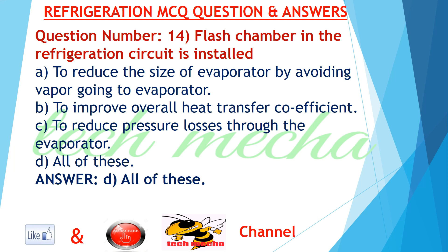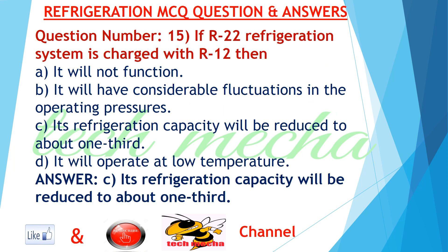Question number 14: Flash chamber in the refrigeration circuit is installed A. to reduce the size of evaporator by avoiding vapor going to evaporator, B. to improve overall heat transfer coefficient, C. to reduce pressure losses through the evaporator, D. all of these. Answer: D. all of these.